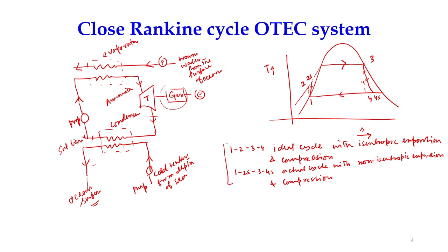The work developed is the turbine work Wt, and the pump work required to pump the fluid is Wp. We can now take a small problem and solve for the calculation of net work done and efficiency of this kind of Rankine cycle, where we use an organic fluid having a low boiling point. We will consider a problem where ammonia is used as the working fluid.